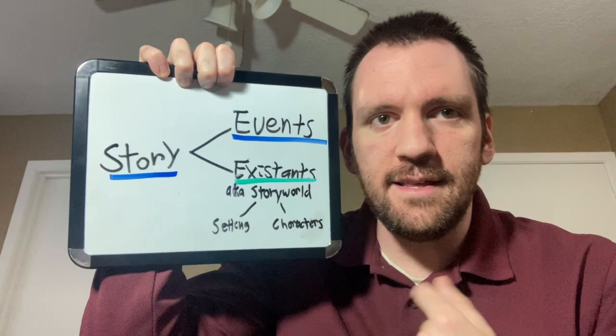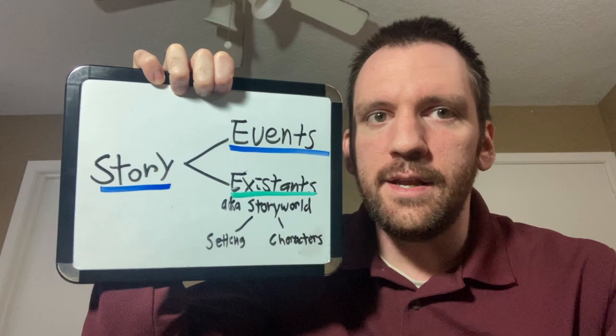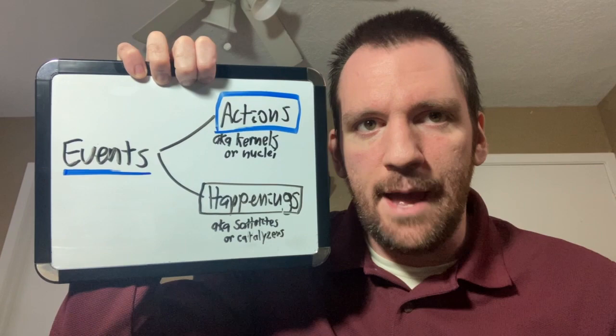The story itself is made of events and existence, also known as the story world. This includes the settings and the characters. Now, you can build a vast setting with a bunch of characters, but that still won't give you a plot. To build a plot, we need events, so let's take a closer look at that.